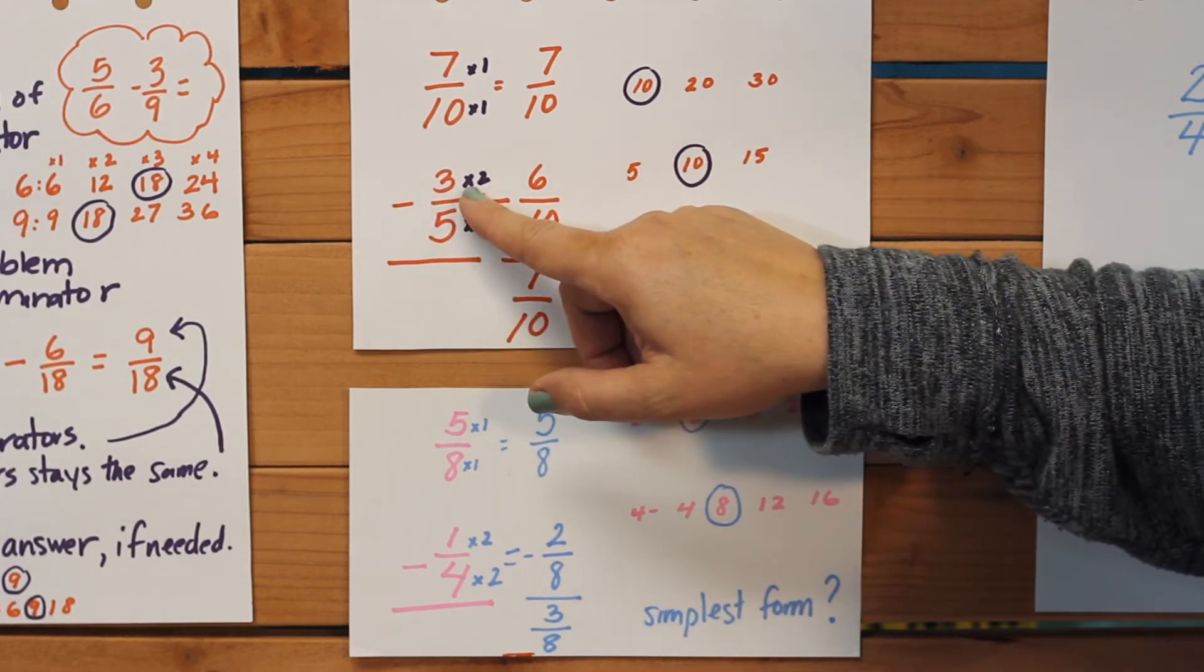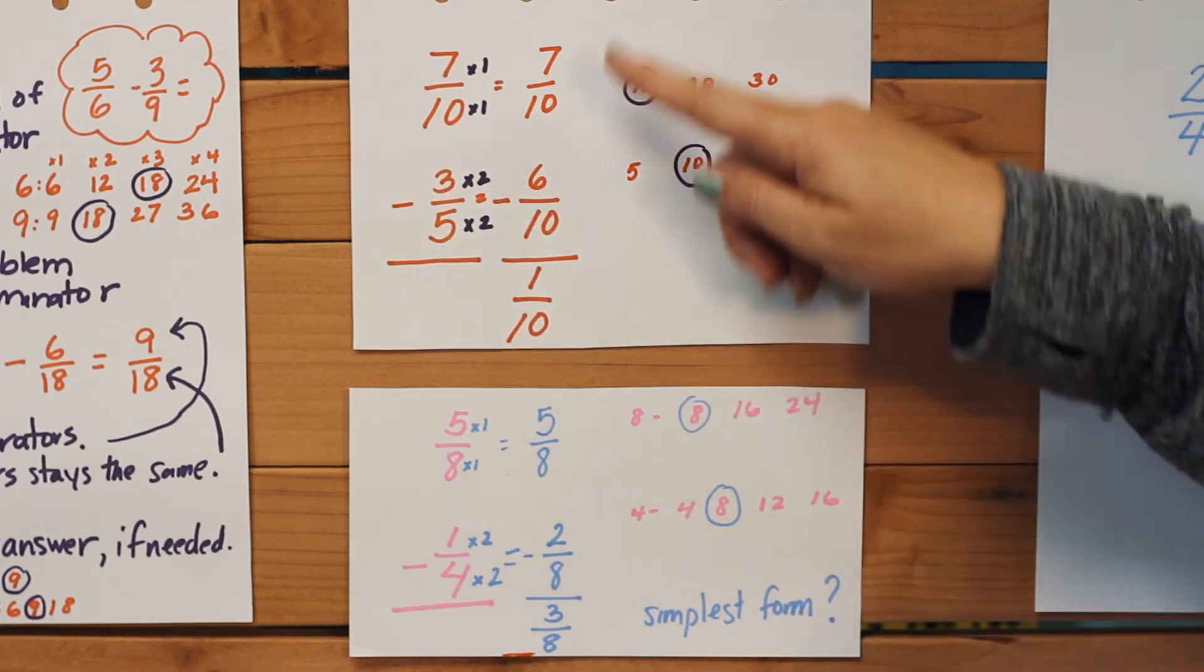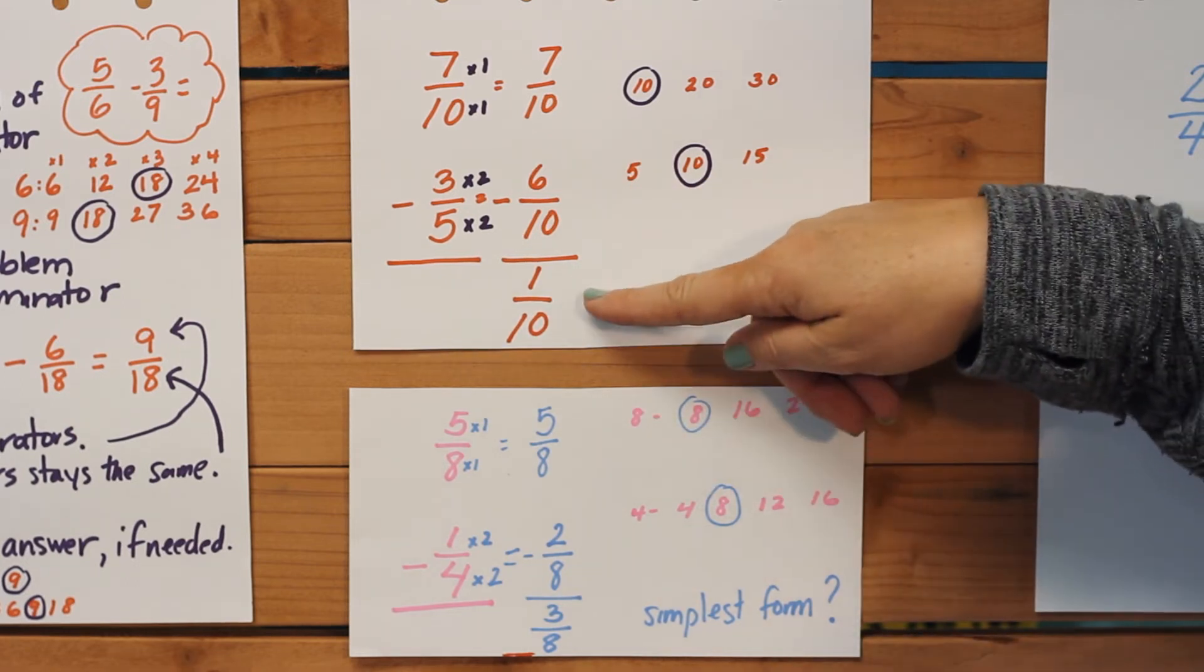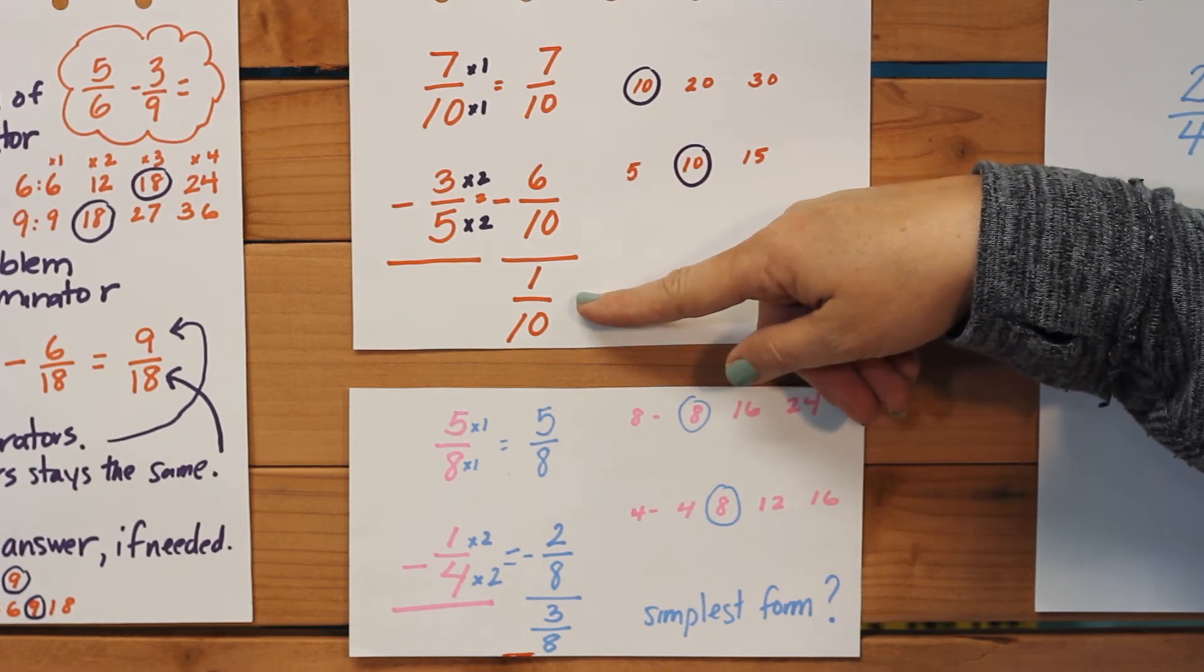So we multiply that, and then we multiply at the numerator also. Three times two is six, so 7/10 minus 6/10 is 1/10. I look at my answer. It's already in its simplest form, so that can be our final answer.